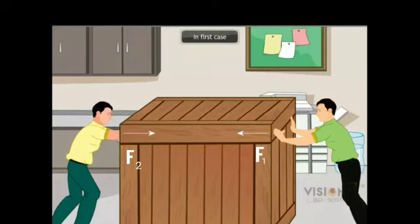Here you can see on an object two forces are acting, say F1 and F2. The forces F1 and F2 are acting opposite to each other and since the magnitude of F1 and F2 are same, the object is not moving to any direction.